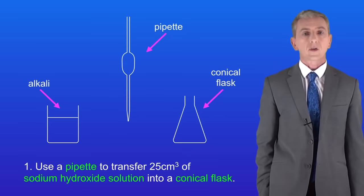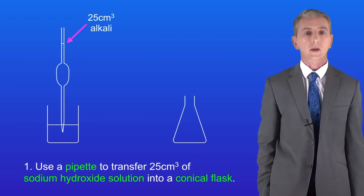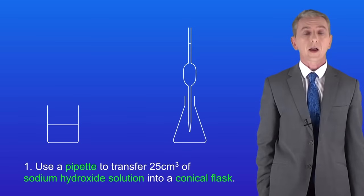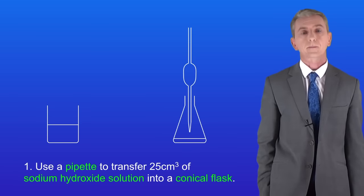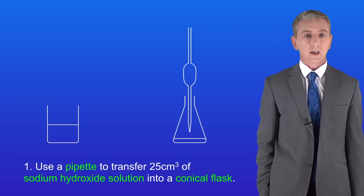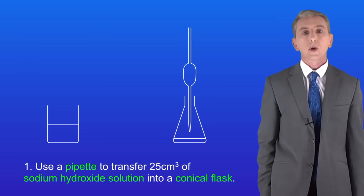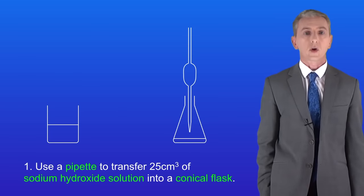First we use a pipette to transfer 25 centimeters cubed of sodium hydroxide solution into a conical flask. The conical flask reduces the risk of splashing. There is one point I need to mention about using a pipette. Normally we'd use a pipette filler to draw liquid into the pipette. It's very important that you allow the liquid to drain out of the pipette rather than blowing it out using the pipette filler. Blowing the liquid out will give you an incorrect volume.